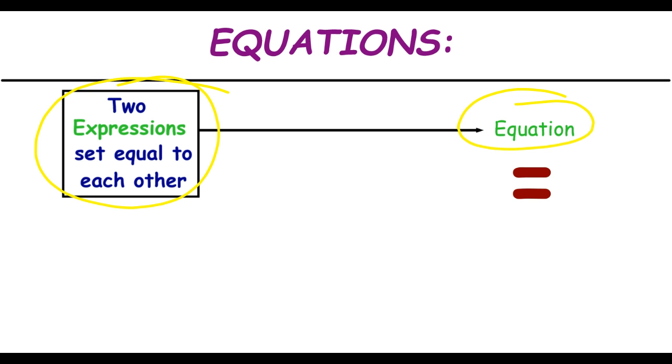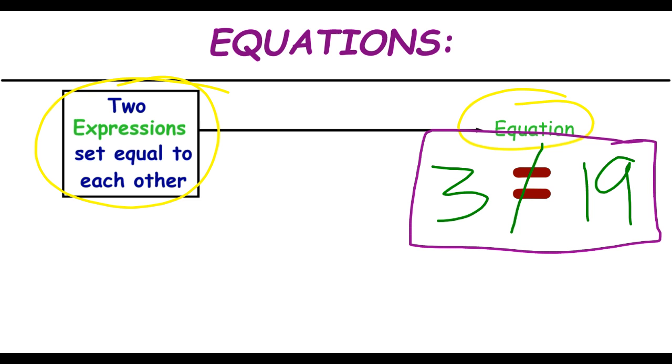Notice this says the definition of an equation is just two expressions set equal to each other. Now we can come up with some ridiculous equations that are obviously not true. For example, we could say three is equal to nineteen. That is obviously not true. That is not equal. Three and nineteen do not have the same value. But it is still two expressions that are set equal to each other, so it qualifies as an equation. It is a false equation, but it is an equation nonetheless.